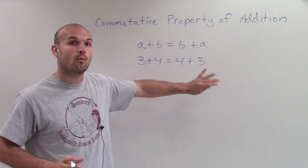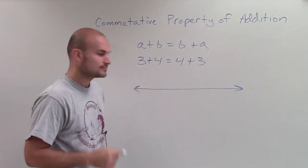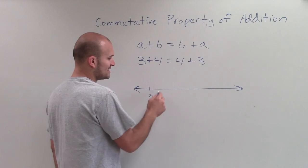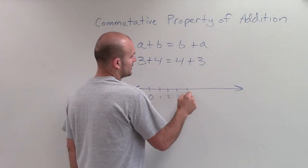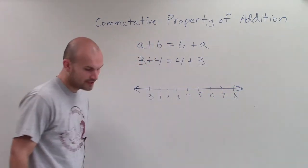So anyways, let's just look at real quick why this makes sense. And to do that, I'm going to use a number line. And so for this number line, I'm just going to use my positive numbers. So I have from 0, I go 1, 2, 3, 4, 5, 6, 7, 8. All right?